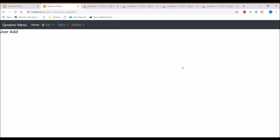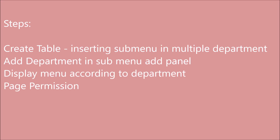Let me quickly summarize what I've done. First, I created a table to insert sub-menus in multiple departments. Second, I added a multi-select department column in the sub-menu add panel. Third, I display the menu according to both the user department and sub-menu department. Last, page permission checks that both the user department and sub-menu department match — only then the page loads.